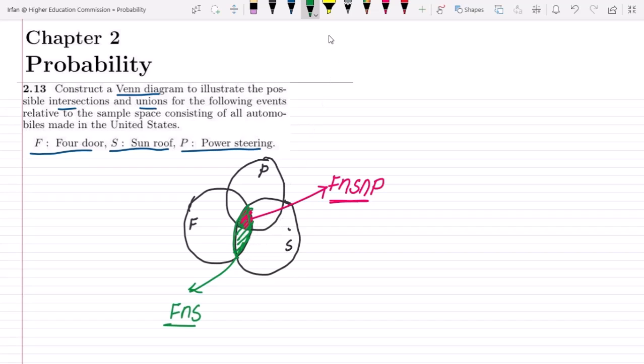Similarly, we can see that there is also another area. Let me make this one as well. And this area is basically the sunroof and power steering. And also this area - let me have this area as well. And this is the four door and power steering.